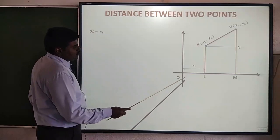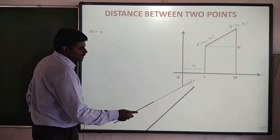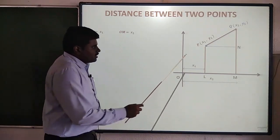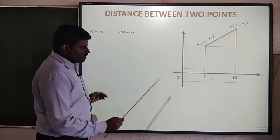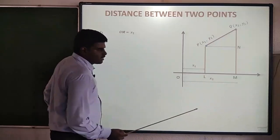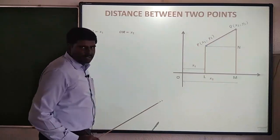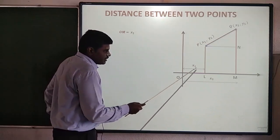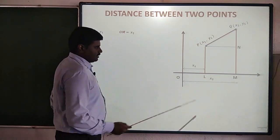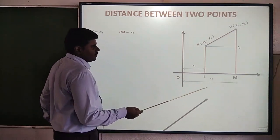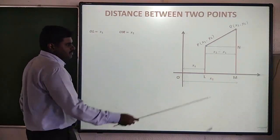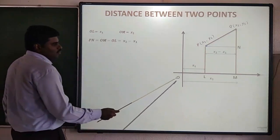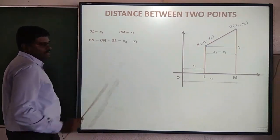The distance of O and L is x1. Similarly, the distance of O to the other foot is x2. I need to find out the distance between B and L. O and L distance minus O and L distance — we will subtract. That is the meaning of x2 minus x1.